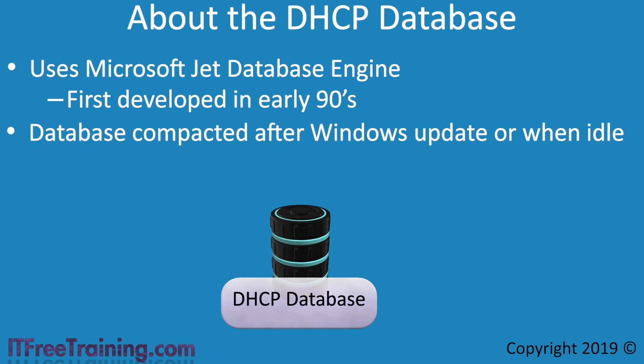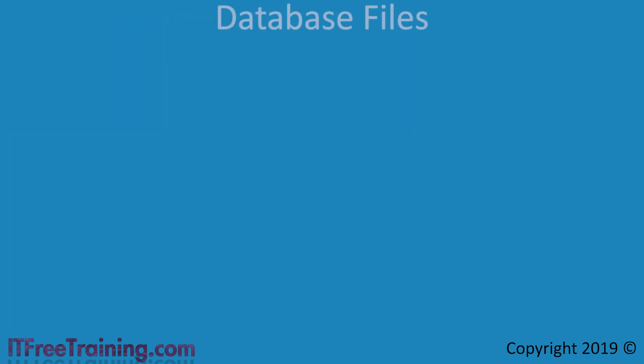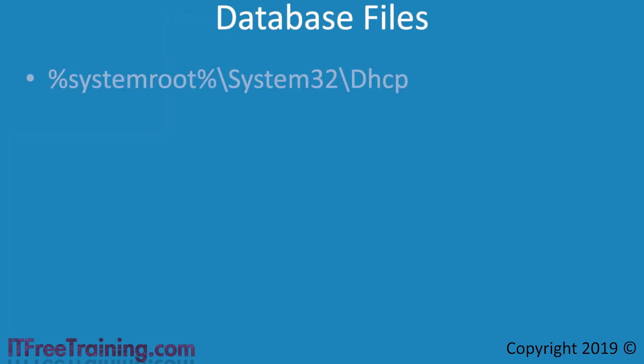Before looking at performing maintenance, moving, or restoring the database, I will first look at the files that make up the database. All the files the DHCP database uses are found in the folder DHCP, located in System32 in the Windows folder.